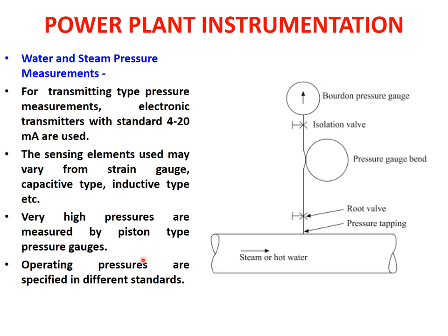The next slide shows a diagram giving the exact setup for water and steam pressure measurement. Through a pipeline, steam or hot water is flowing and the Bourdon tube pressure gauge is mounted at height. The pressure gauge bend is employed at the connection point, along with a root valve and isolation valve as covered in previous lectures. The pressure is measured via the Bourdon tube pressure gauge using this pressure gauge bend.